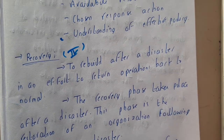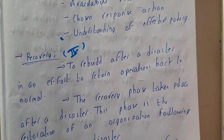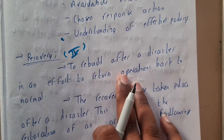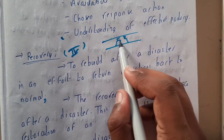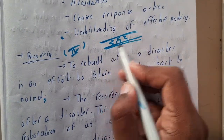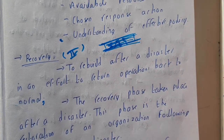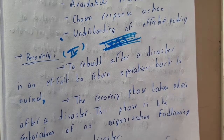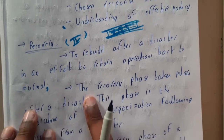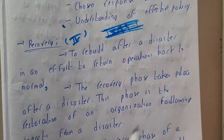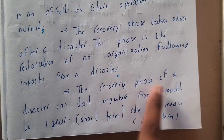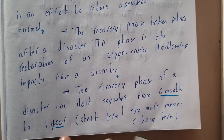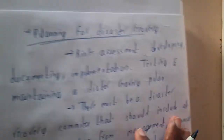The fourth phase is recovery — to rebuild after a disaster and return operations back to normal. For example, after an earthquake cracks and displaces a road, you block it and reconstruct it completely. The recovery phase takes place after the disaster has occurred. It is a restoration of the organization following the impact of the disaster. The recovery phase can last anywhere from six months to one year — called short-term — and more than one year is called long-term.